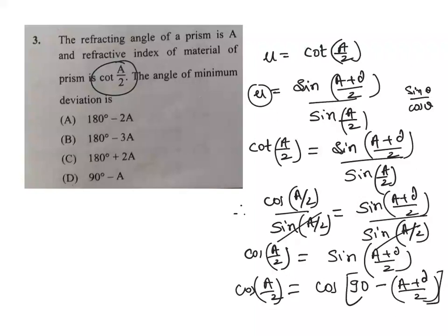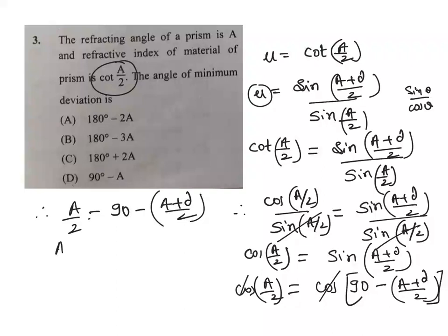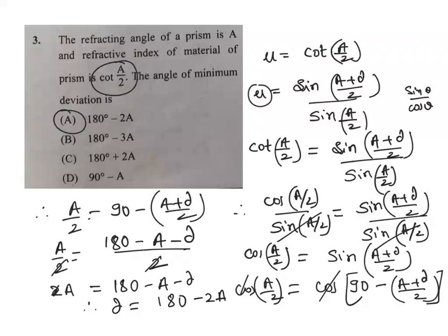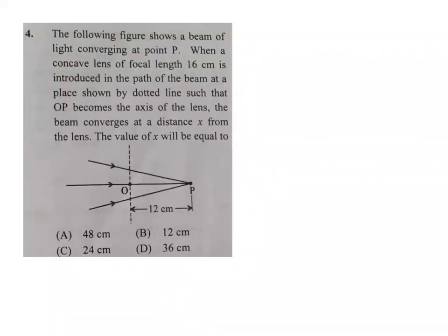Since cos equals cos, we equate: A/2 equals 90 minus (A + delta)/2. Simplifying: A/2 equals (180 minus A minus delta)/2, giving 2A equals 180 minus A minus delta. Therefore delta equals 180 minus 3A. Option A is the right answer for this question.